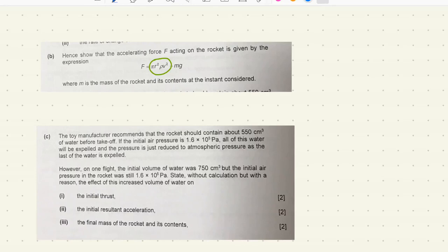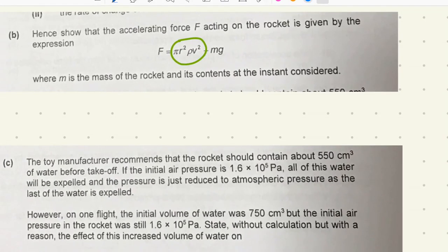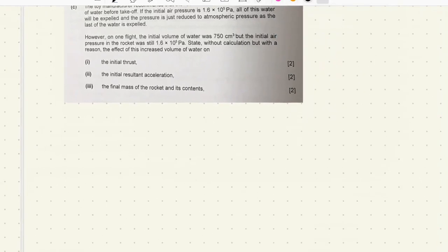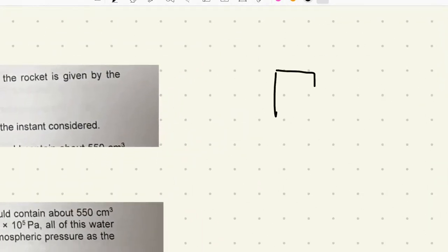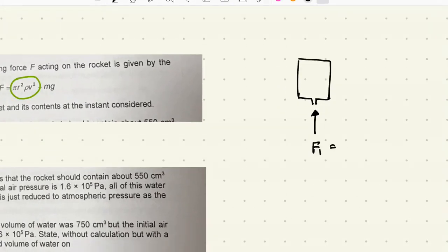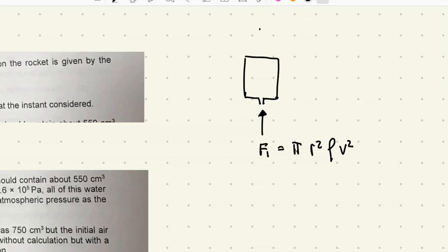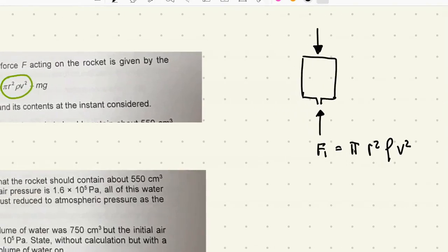Part B. Show that the accelerating force acting on the rocket is given by the expression F equals pi r squared rho v squared minus mg. Very simple. For question B, we just show the toy rocket like this. Two forces acting on it. F1 is the force pushing it up. It's pi r squared rho v squared from our previous answer. Then there is a downward force called mg, which is the weight.